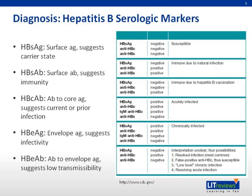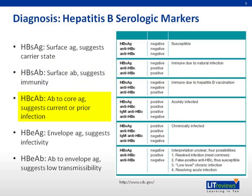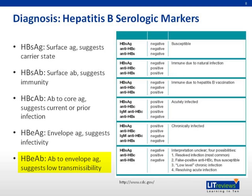In order to diagnose hepatitis B, we need serologic markers. HBSAG, the surface antigen, suggests carrier state. HBSAB, the surface antibody, suggests immunity. HBCAB, the antibody to the core antigen, suggests current or prior infection. HBEAG, the antigen to the envelope, suggests infectivity. HBEAB, the antibody to the envelope antigen, suggests low transmissibility.